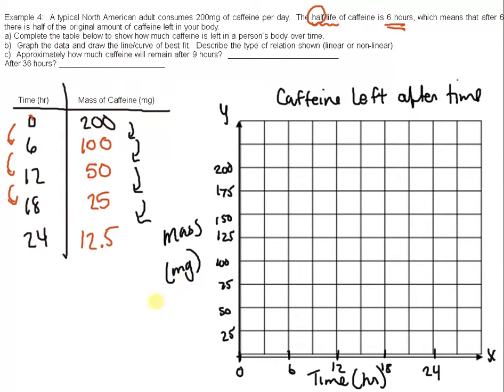And now let's plot. 0, 200. 6, 100. And just make sure that you actually go over six, which on my graph is two blocks. 12, 50. 18, 25. 24, 12.5. And for this one, this is definitely not a line of best fit. This is going to be a curve of best fit. So we did a curve of best fit. This is definitely non-linear.